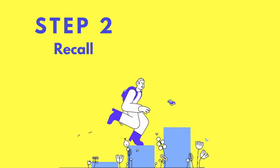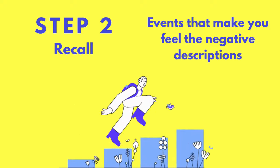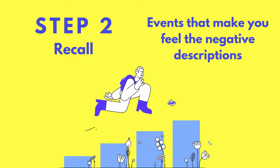Step 2 is recall. Think back to something from your childhood that first made you feel the negative description you wrote in step 1. You can also recall recent events that have reinforced this description.